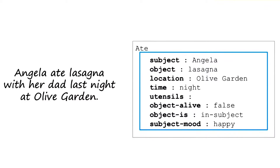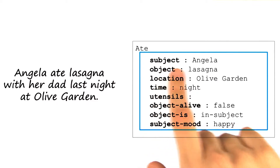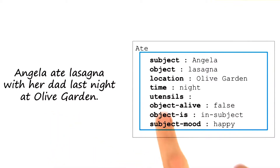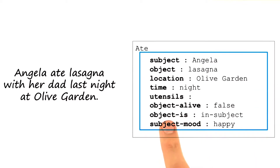David, were you able to come up with an answer to this question? So I started with the slots that we listed earlier. For our subject, we now have Angela. For our object, we now have lasagna. This time we have a location — our location is Olive Garden. Our time is night. We weren't given utensils, and we weren't given anything to suggest that the object is still alive, or that the object is not in the subject, or that the subject isn't happier having eaten dinner. We probably could have put some more information in here as well — for example, we could have put her dad in here in some way, but we haven't yet looked at the slot that would take care of that.